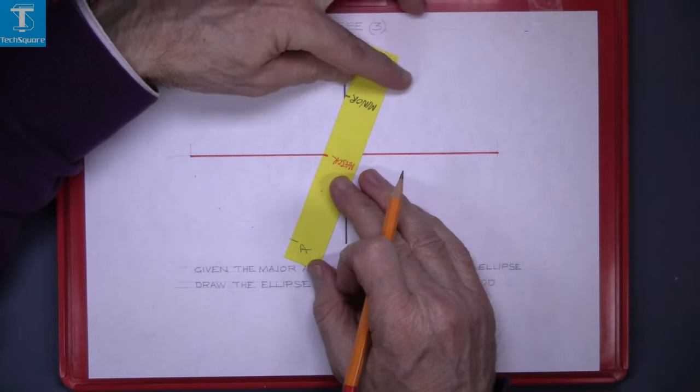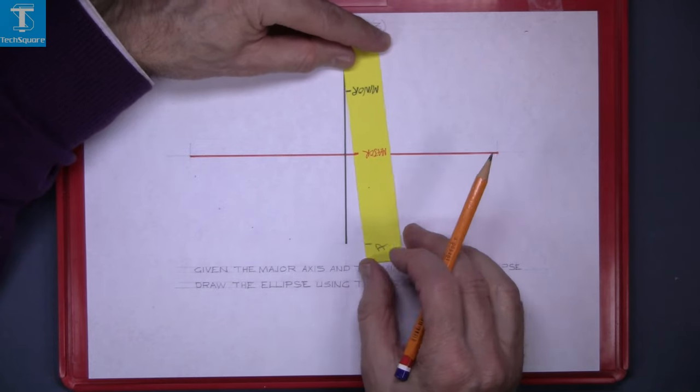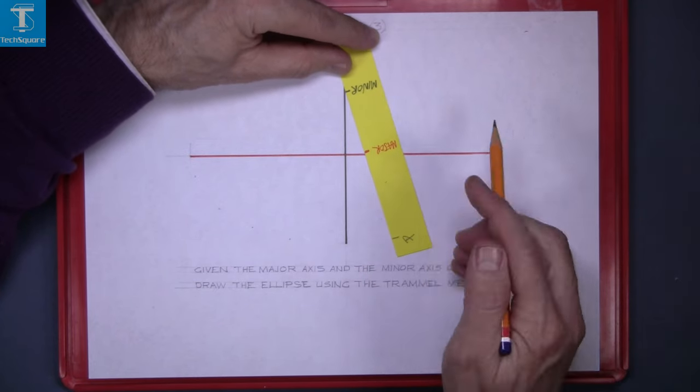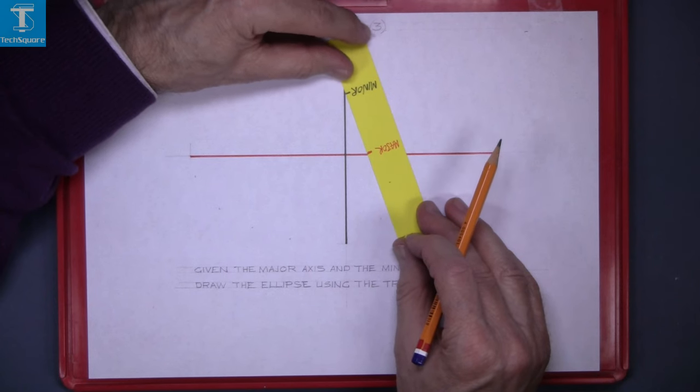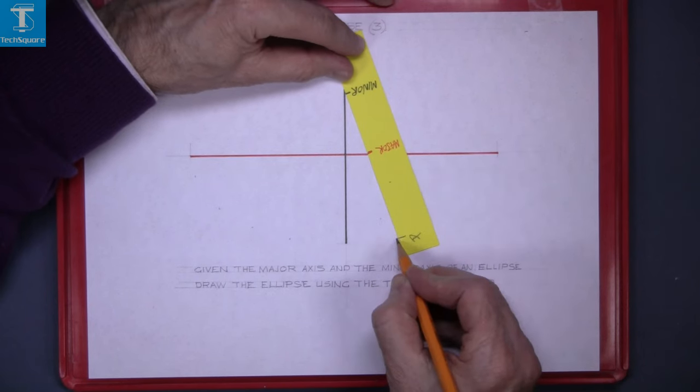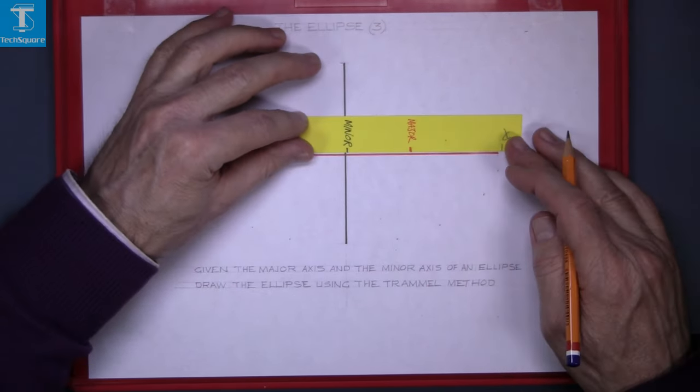When you get to this vertical position here, now the major one moves across the major axis. Mark a point and continue doing that right around the curve.